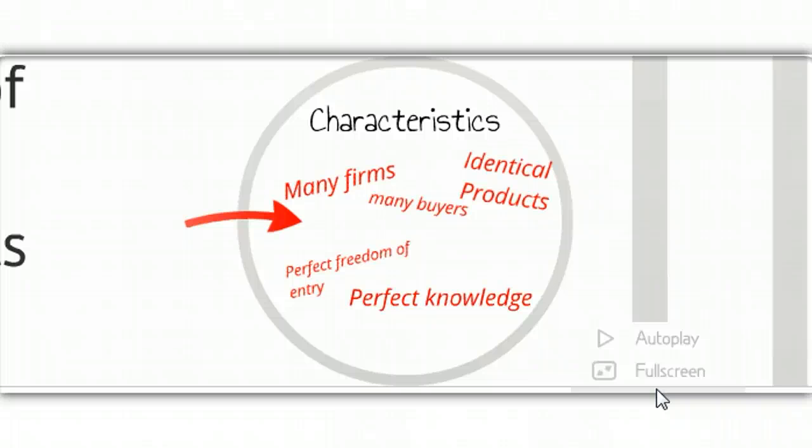Some of the characteristics that exist in a perfect competition market are that there are many firms and many buyers who are selling identical products. There is what we call perfect freedom of entry. That means in order to begin selling in this market, you wouldn't have anything barring your way. You wouldn't have to have a lot of finances or government regulation. Those things wouldn't exist, and that's part of the reason why there would be so many firms in this business.